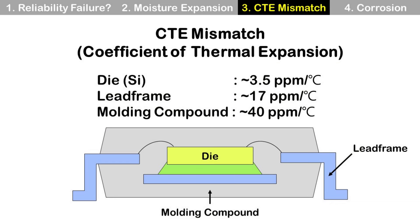These are typical CTE values for materials in a lead frame package. The CTE of silicon die is around 3.5, lead frame is around 17, and molding compound is around 40, in units of PPM (parts per million). This is one example, and CTE for die, lead frame, and molding compound will differ depending on material composition. As you can see, the CTE values are different from each other, so there will be CTE mismatch caused by temperature change, such as in temperature cycling.